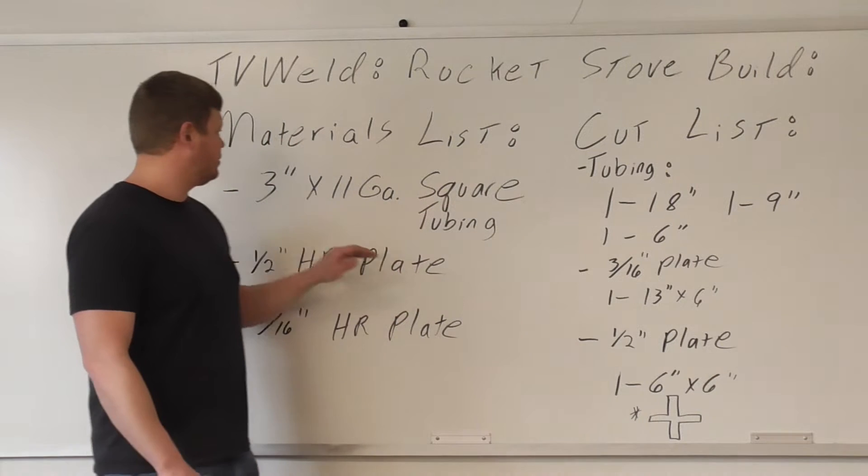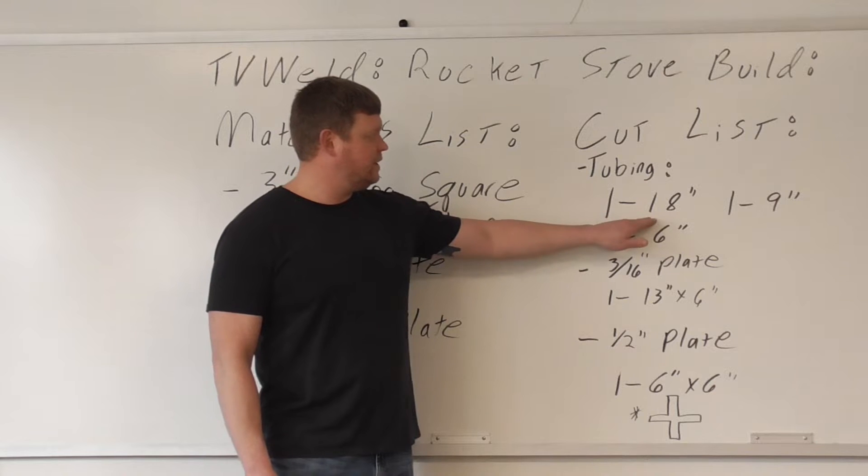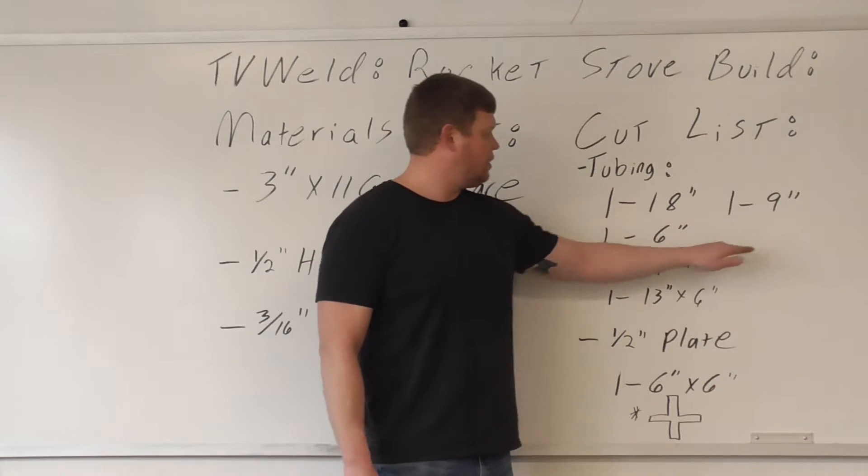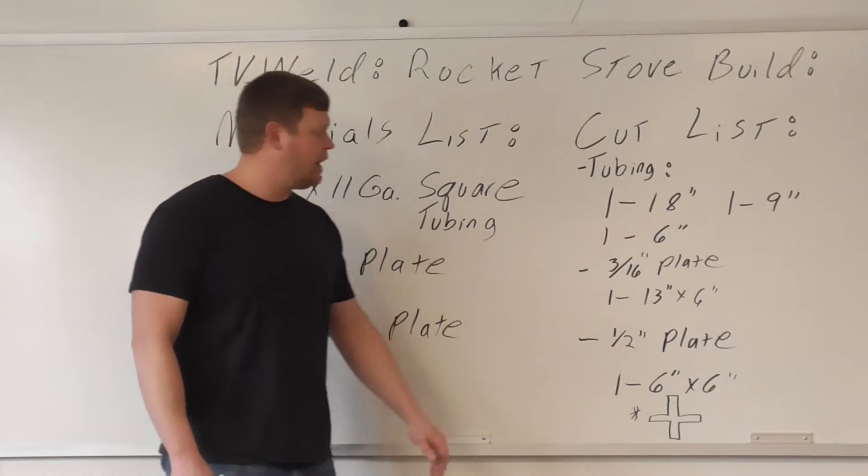Tubing, that's going to be this 3 inch, 11 gauge square tubing. We're going to need a 1'18" inch, 1'9" inch, and 1'6" inch piece cut. We're going to use a horizontal bandsaw to do that.